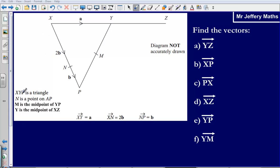We're given some information on the diagram here. We're told that XYP is a triangle, N is a point on AP, and M is the midpoint of YP. Y is the midpoint of XZ.